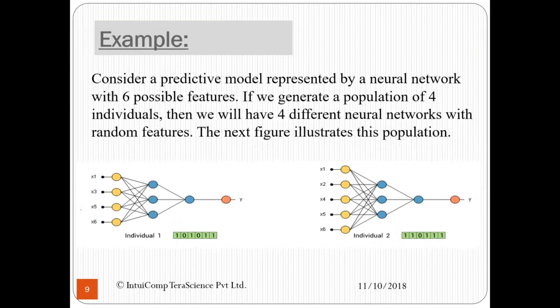Let us take an example. Consider a predictive model represented by a neural network with six possible features. If we generate a population of four individuals, then we will have four different neural networks with random features. The next figures illustrate this population. Here, the chromosome represented by 101011 means that we have selected the features 1, 3, 5, and 6.